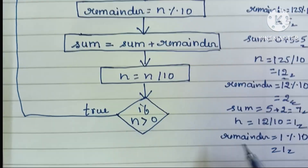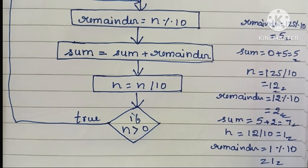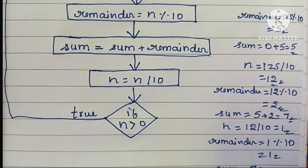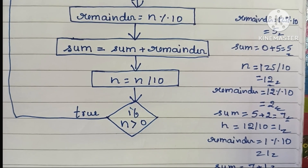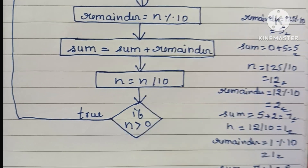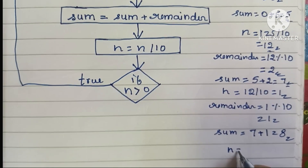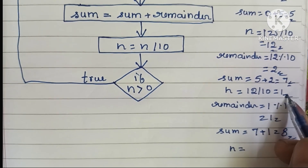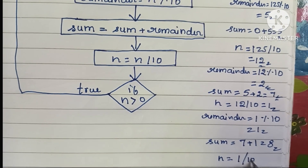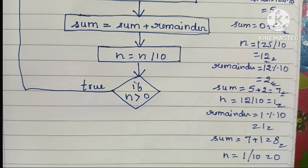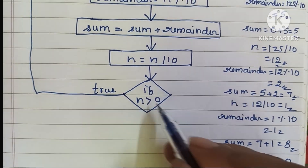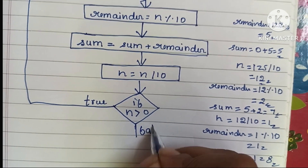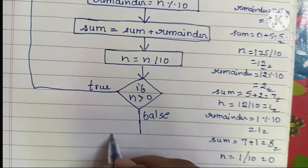Next, sum is equal to sum plus remainder: 7 plus 1 gives sum equal to 8. Then N is equal to N divided by 10: 1 divided by 10 gives N equal to 0. We check if N is greater than 0 — 0 is not greater than 0, so the condition is false.